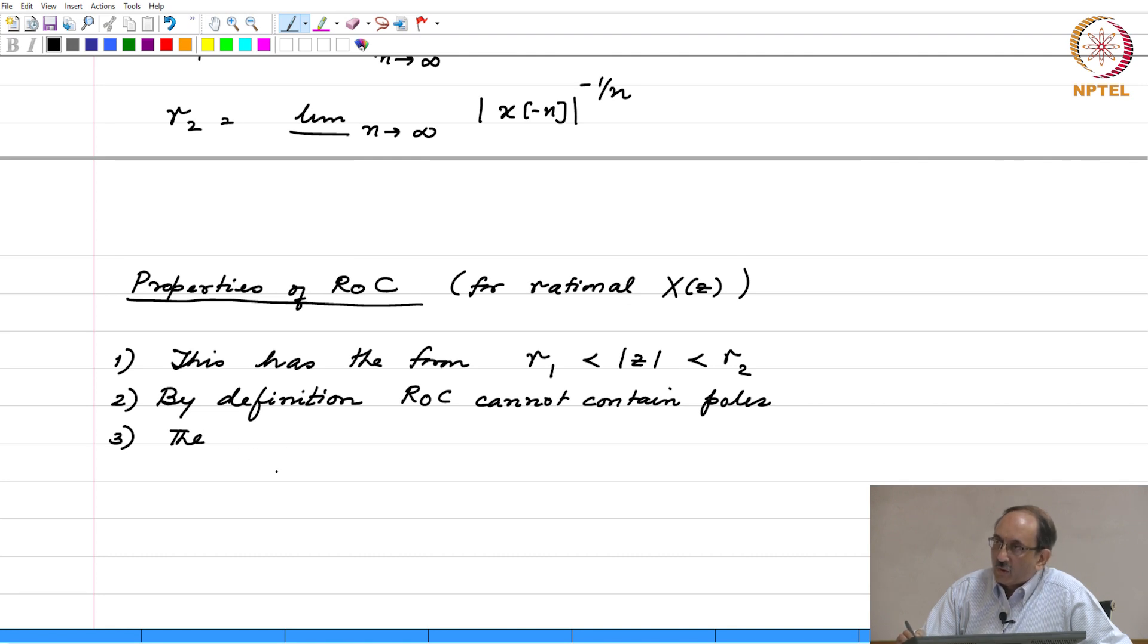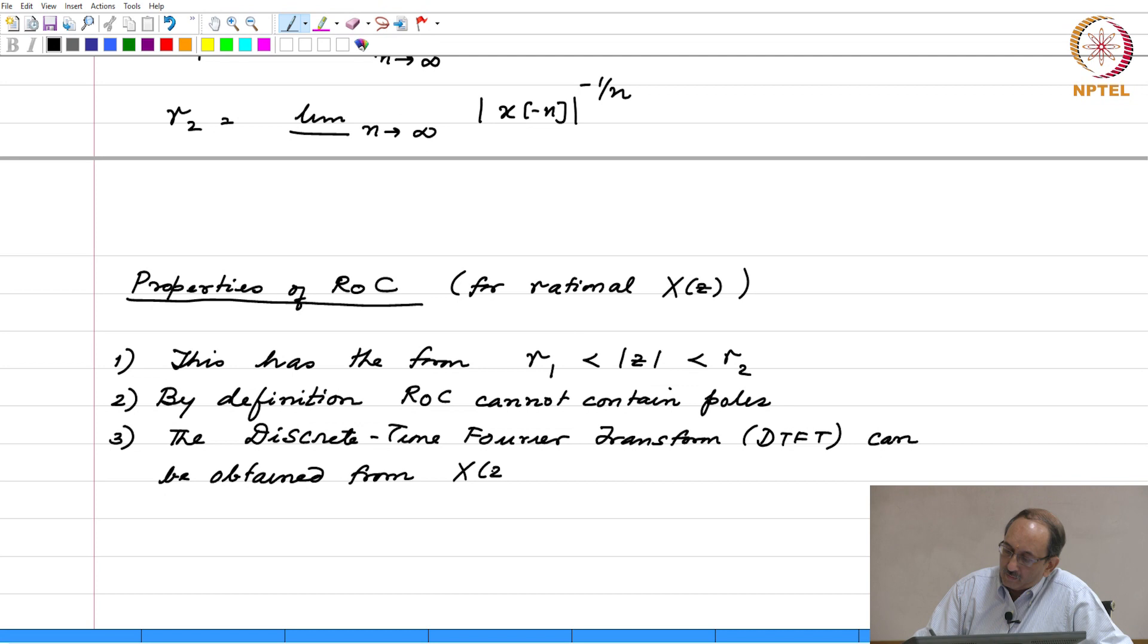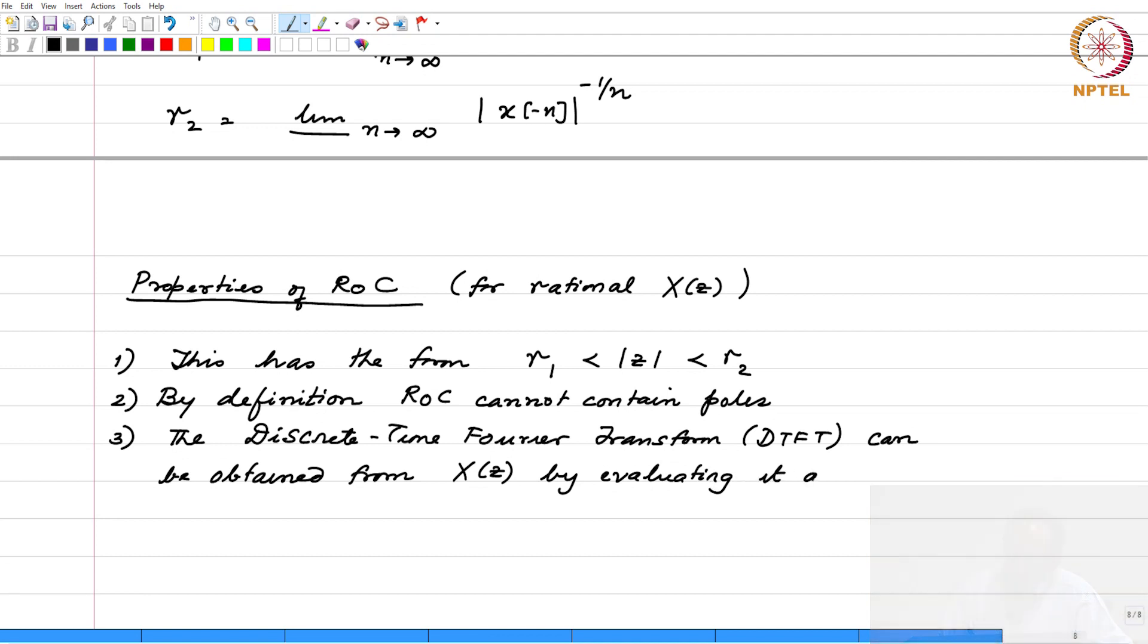We will later define what is called the discrete time Fourier transform. The discrete time Fourier transform, abbreviated as the DTFT, which is the counterpart to the CTFT (continuous time Fourier transform), can be obtained from x of z by evaluating it along the unit circle. This should remind you of evaluating the continuous time Fourier transform by taking the bilateral Laplace and replacing S by j omega.